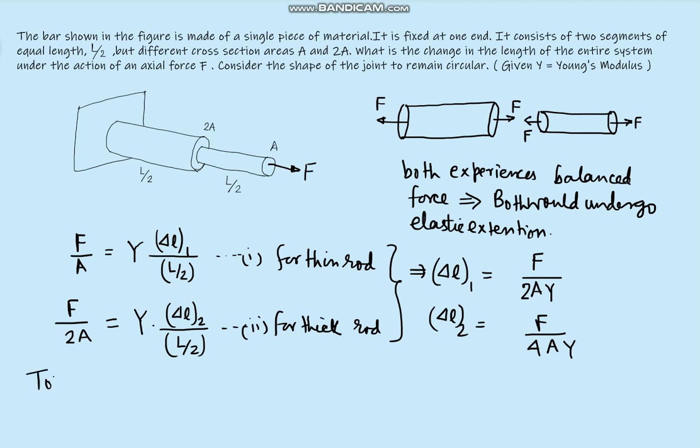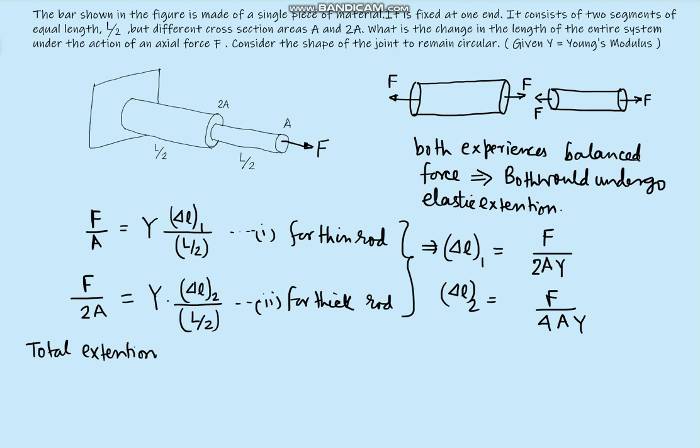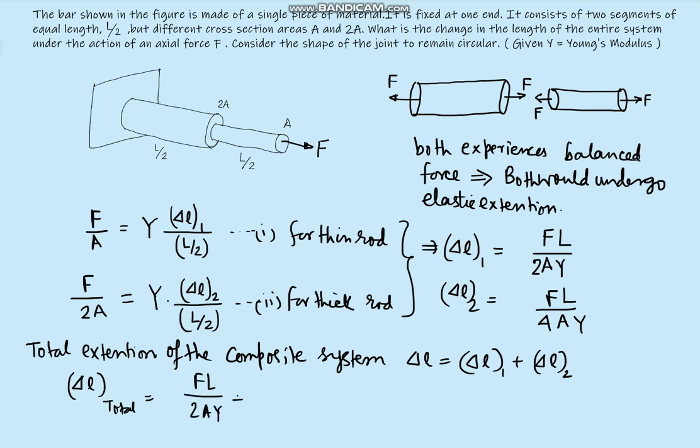So now the total extension of the composite system of rods we can write as ΔL = ΔL₁ + ΔL₂. ΔL₁ has FL divided by 2AY and ΔL₂ has FL divided by 4AY. So ΔL total for the composite rod should be equal to FL/(2AY) + FL/(4AY).